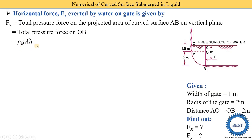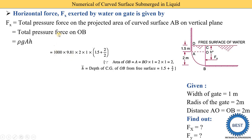Fx equals rho × g × A × H-bar. This equation was derived in the last video — if you don't know how this equation is derived, please watch the last video on curved surface submerged in a liquid; the link is provided in the description. Here rho (density of water) is 1000, g is 9.81. The area of OB: OB is a rectangular portion with height 2 meters and width 1 meter, so area equals 2 × 1 = 2 square meters.